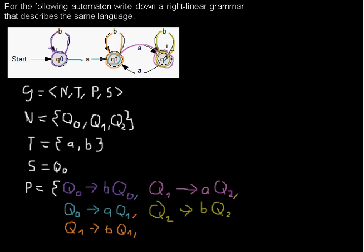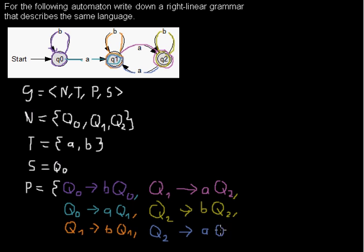We have one arc left: when we are in q2, we read an input symbol a and move to q1. In the production rule it would be the same — we have q2, we generate an a and move to q1, giving us q2 → a q1.